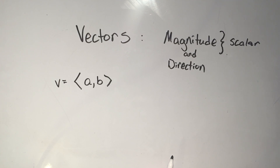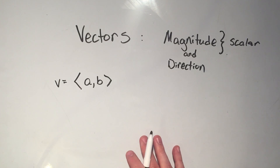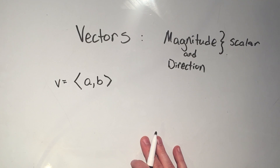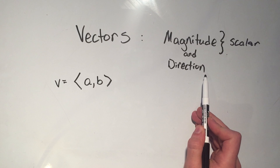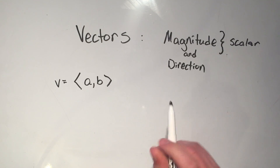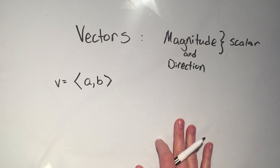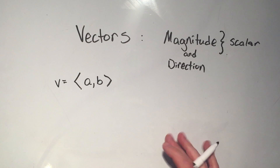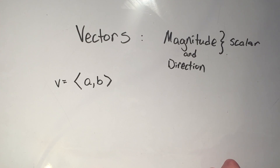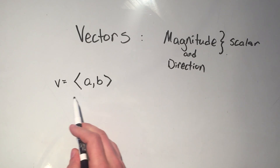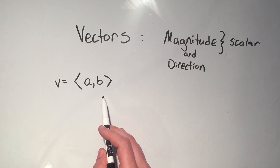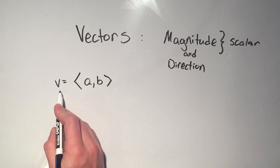That's where vectors come in. If you were driving down the road going 100 miles an hour south, well then that would be a vector, because you have a magnitude — which is your speed — and the direction that you're going. This is usually how that's represented.